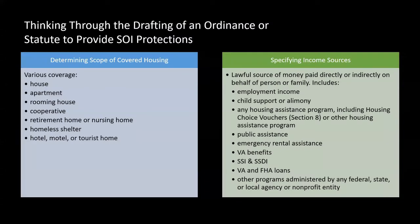A couple of things to think about when drafting or proposing an ordinance or statute to provide source of income protection. First is the scope of the housing. It's clear that it would cover a house, rental house, apartment for rental, even a rooming house, or a co-op.